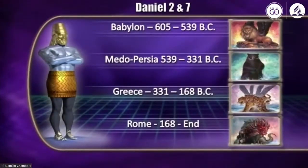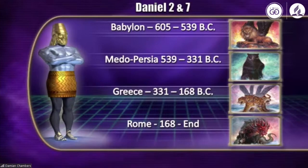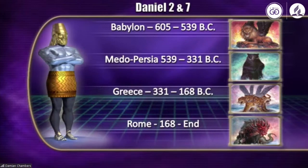On the screen you'll see a summary of Daniel chapters 2 and 7, along with the kingdoms and the dates that they ruled. The head of gold represents Babylon in Daniel chapter 2, and the lion represents the same kingdom in Daniel chapter 7. Then you have the bear and the chest and arms of silver representing Medo-Persia, who ruled from 539 to 331 BC. Then the thighs of brass and the leopard with four wings and four heads represent Greece, and the legs of iron and the fourth beast represent Rome.